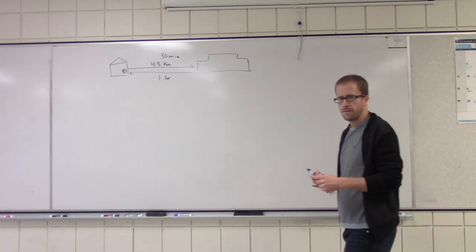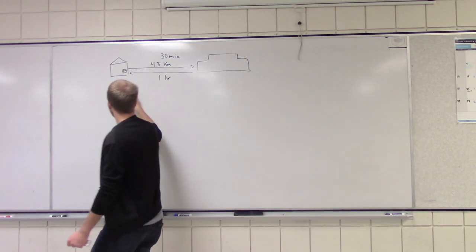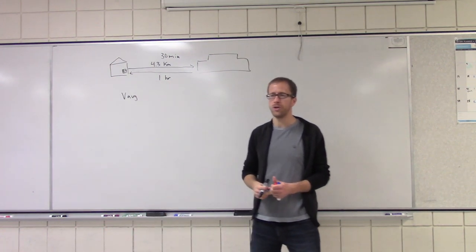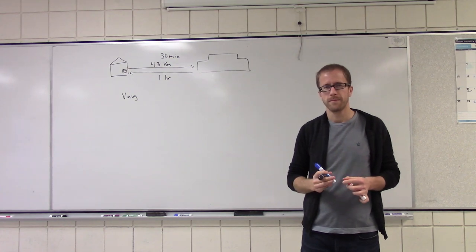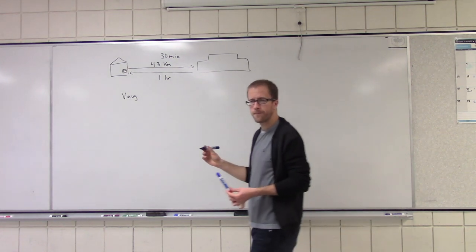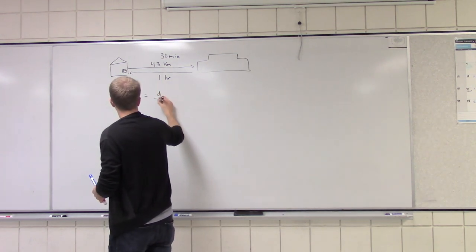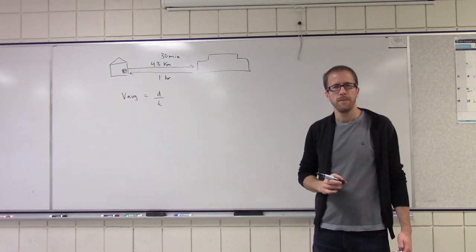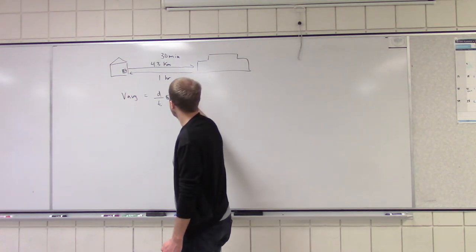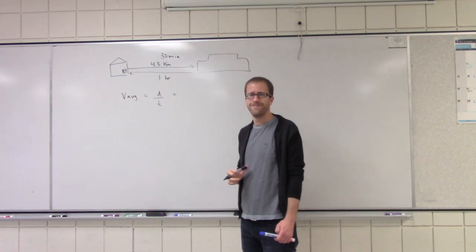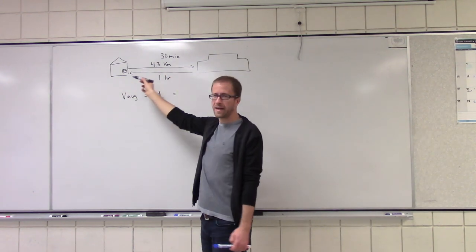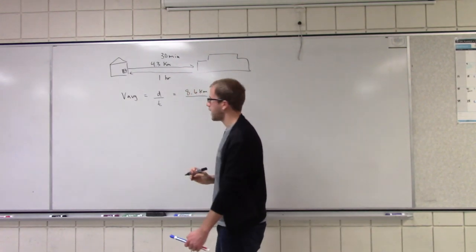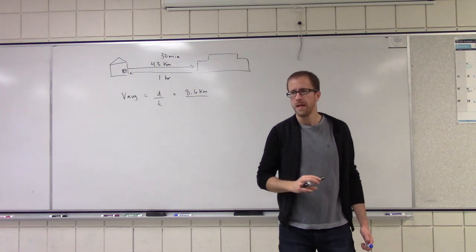Now, based on this information, what was Kenny's average speed during this journey? What is our average speed again? Our total distance over our total time. So what was our total distance? There and back — that is 8.6 kilometers. And what was our total time? 1 hour and 30 minutes.